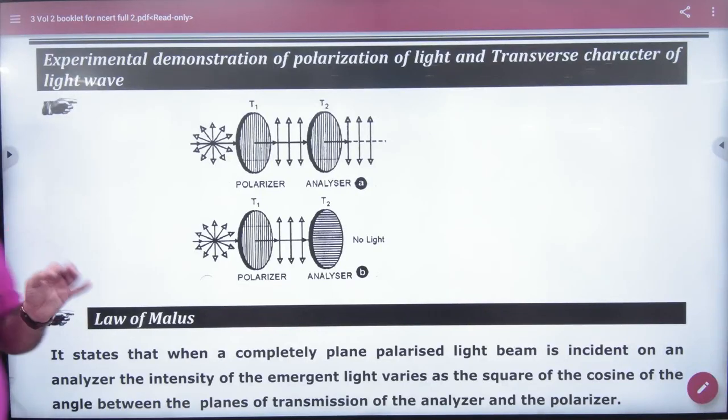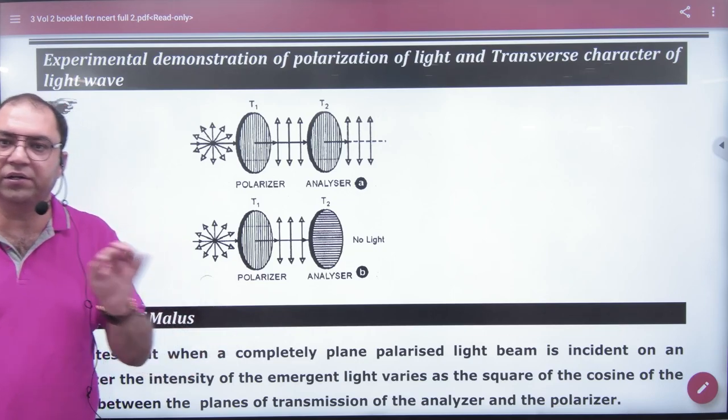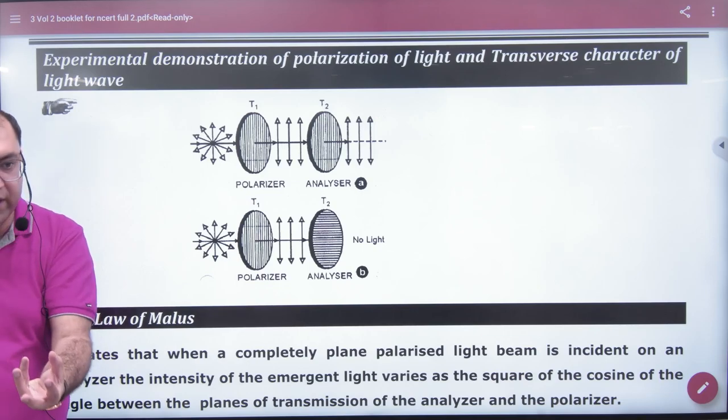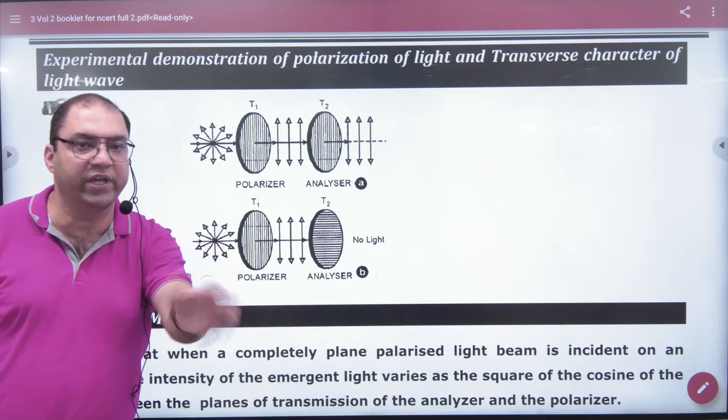An experimental demonstration is to see that light is polarized or not. So, take two crystals for this. You have to take tourmaline crystals, not two. One will polarize the light and one will check that light is polarized or not.